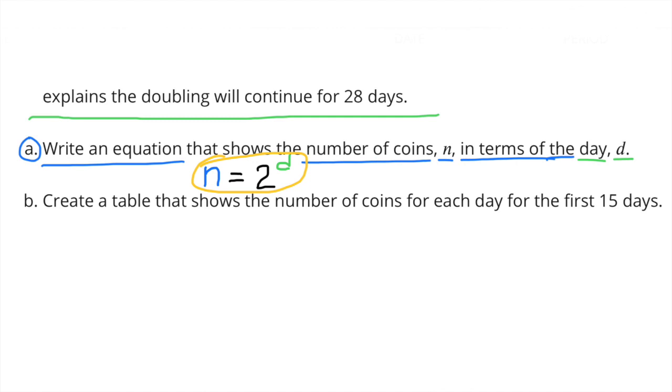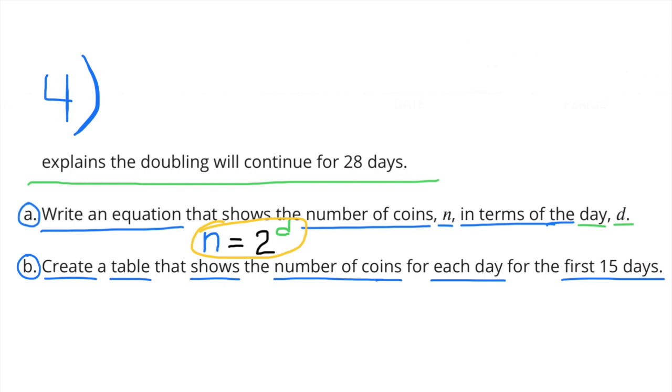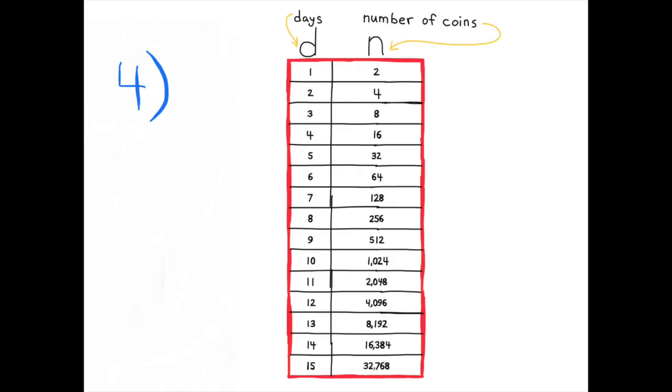The number of coins equals 2 to the power of number of days, or N equals 2 to the power of D. B. Create a table that shows the number of coins for each day for the first 15 days. On the left hand side of the table, I have days. And I started with 1, and I just added a day each time until I got 15 days. 1, 2, 3, 4, and so on until 15. In the column of the right hand side of the table, I have the number of coins. I started with 2 coins, and I doubled it each time for the first 15 days.